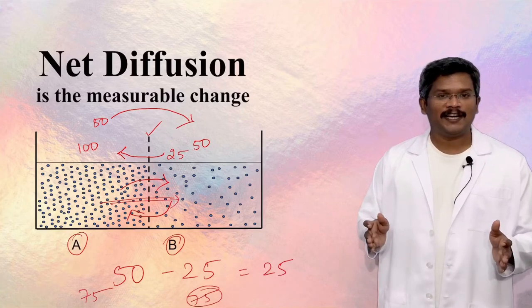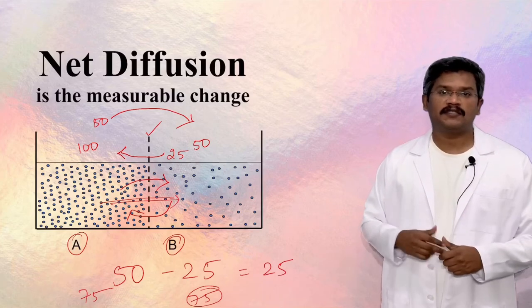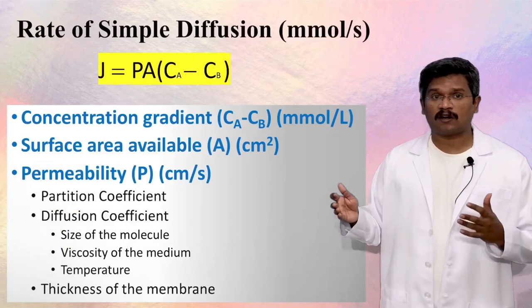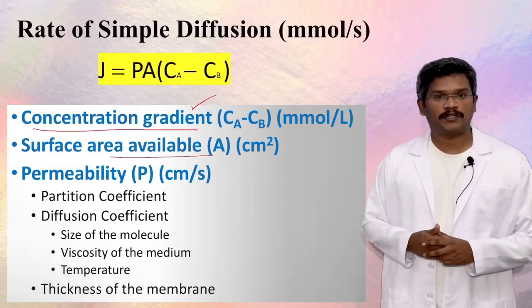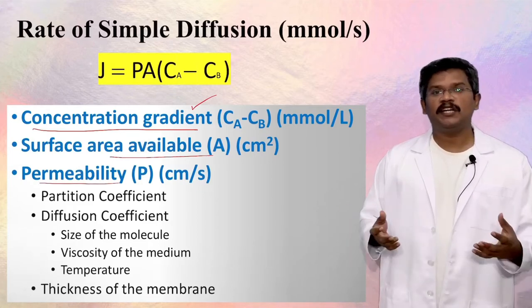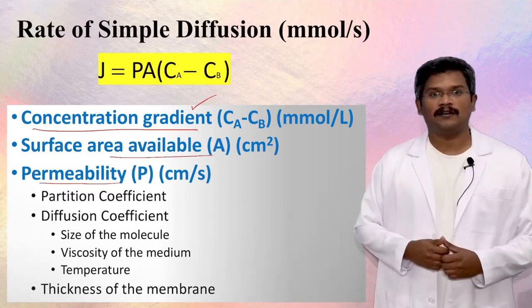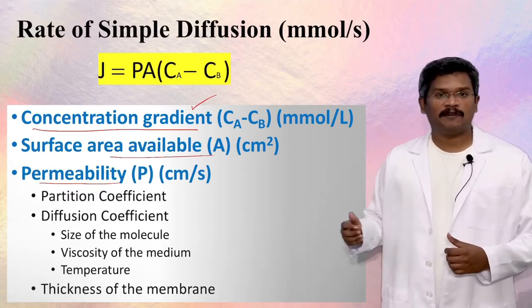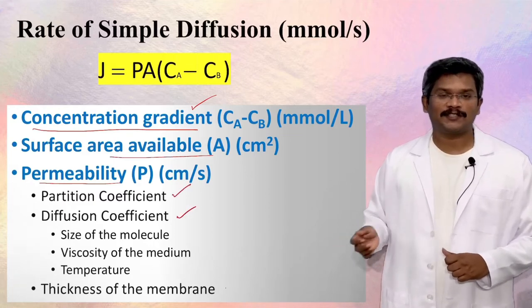After equilibrium, though there is random molecular movement, there will not be any net diffusion. The rate of simple diffusion is determined by multiple factors: first, the concentration gradient across the membrane; second, the surface area available for diffusion; and third, the permeability of the solute. Permeability is the ease with which the molecule can move across the membrane, and it is determined by multiple factors like partition coefficient, diffusion coefficient, and the thickness of the membrane.